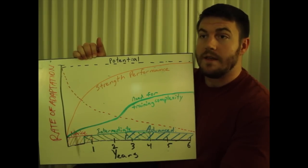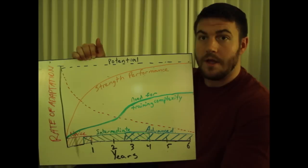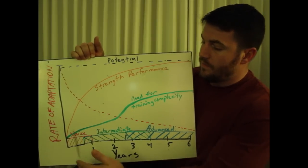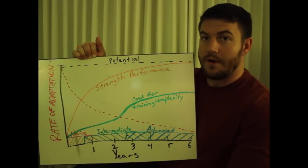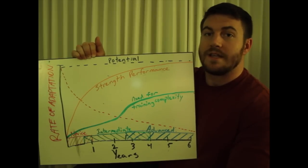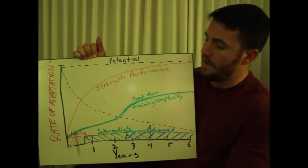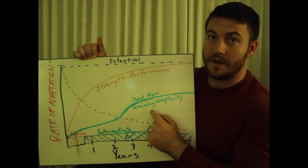But because our bodies are so highly prepared to adapt to any sort of stressor that we put them under, even if you are doing really hard workouts, really hard exercise, your body is going to adapt to that quickly and your gains are going to stall unless you have a plan. And that is where training complexity comes in.